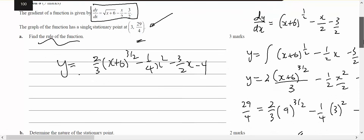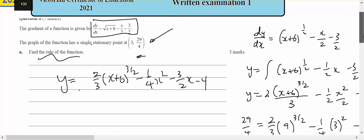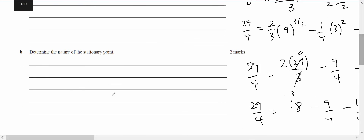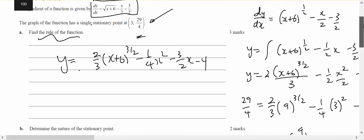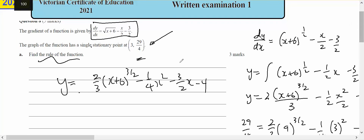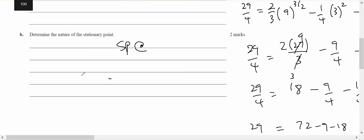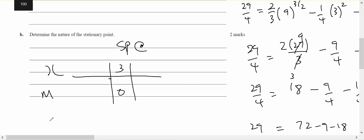Determine the nature of the stationary point. I've got a stationary point at (3, 29 on four). I know that when x equals three the gradient is equal to zero. I'm interested in finding the gradient before three — for example when x equals zero — and greater than three, when x equals four.